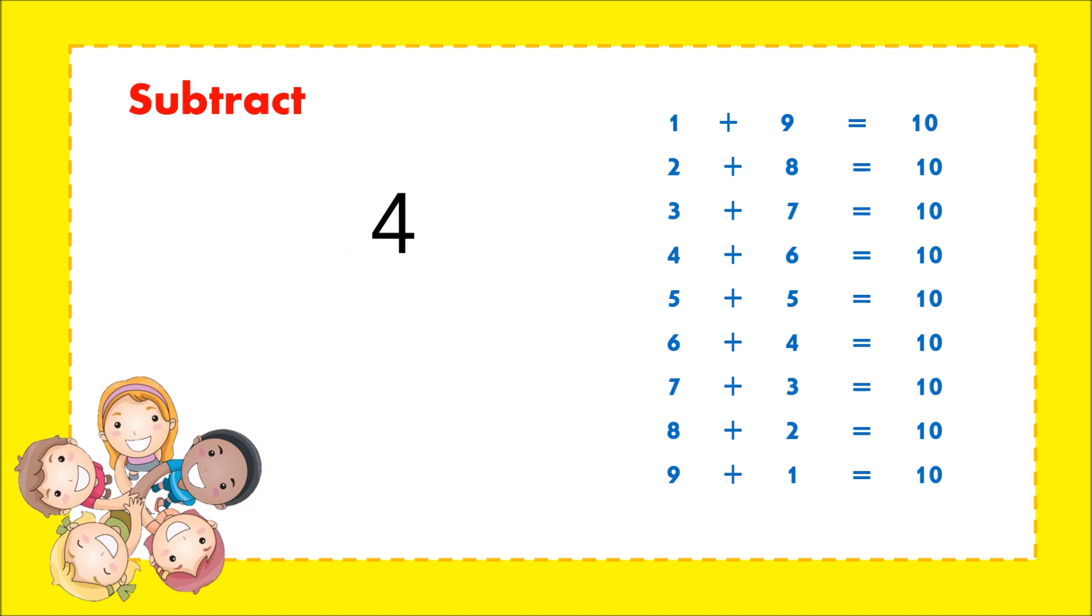42 minus 27. 2 minus 7 is not possible, so we will use partner numbers again. The partner of 7 is 3. Add 3 to 2, the answer is 5. Since we use partner numbers, we will borrow 1 from 4 and 4 becomes 3.